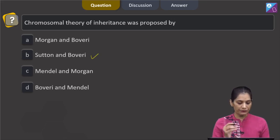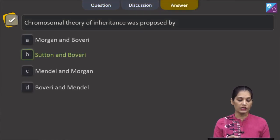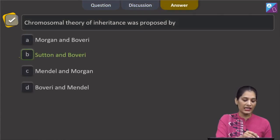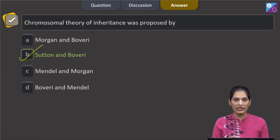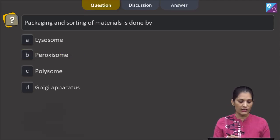What about the other scientists? Morgan verified the chromosomal theory of inheritance and Mendel is father of genetics. So the correct option for the given question is option number B which says Sutton and Boveri. Let's move to the next question.